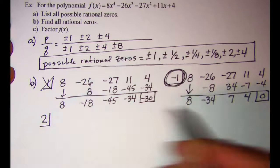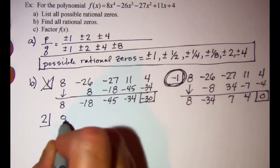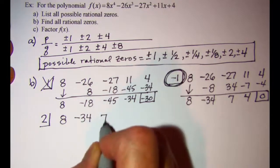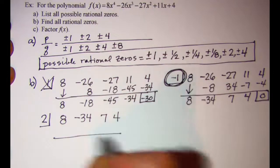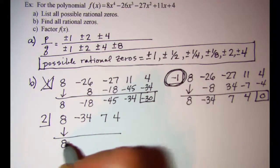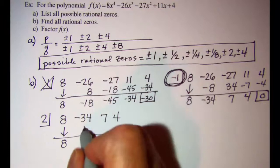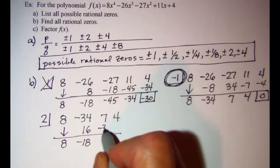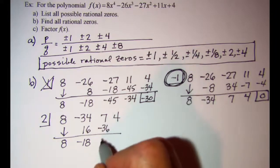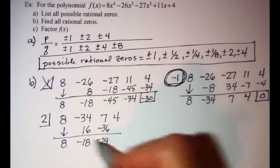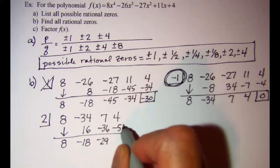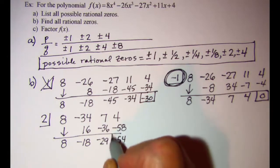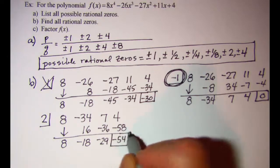Trying k = 2 with coefficients 8, -34, 7, and 4. Bringing down the 8, then 16, giving -18; then -36, giving -29; then -58, giving a remainder of -54. So 2 is not one of my zeros.